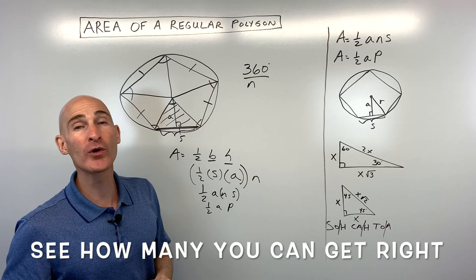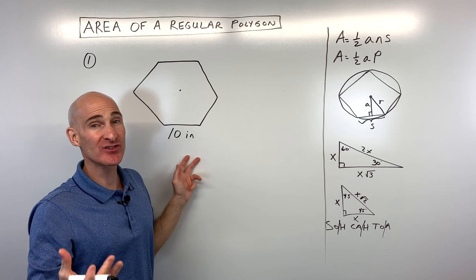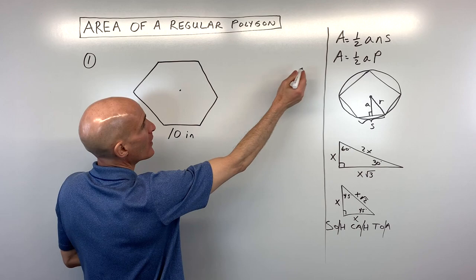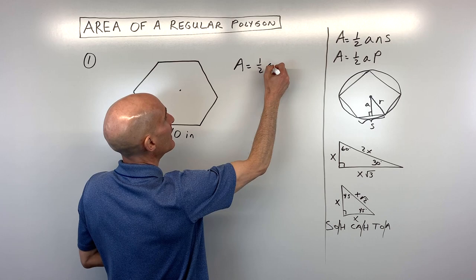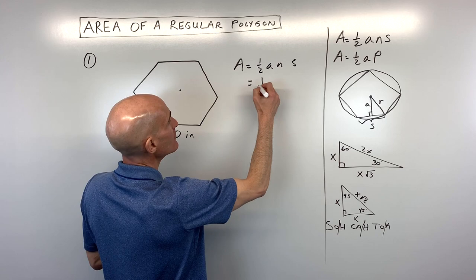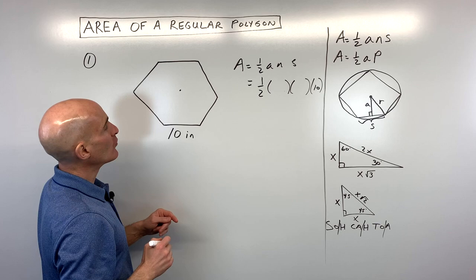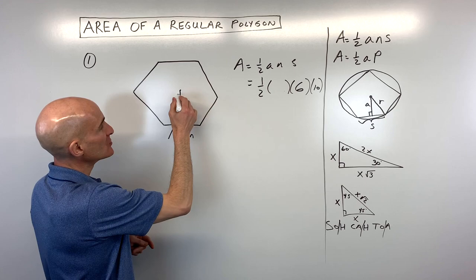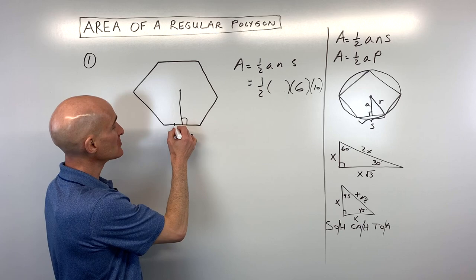Example one: we're given a regular hexagon, meaning six congruent sides and six congruent angles. Using the formula area equals one-half A times N times S, we know the side length S is 10, and the number of sides N is 6. Now we need to find the apothem. When we drop a perpendicular to the side, it bisects that side, so each half is 5.